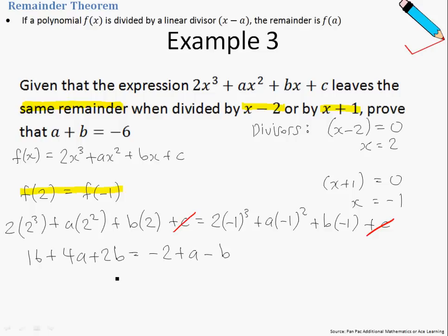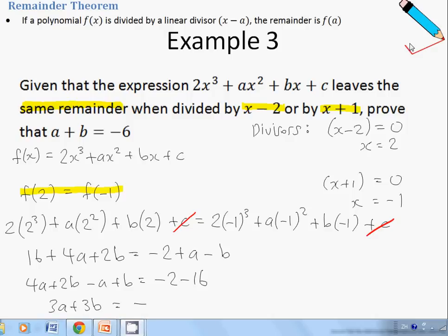The next thing I'm going to do is shift all the unknowns to the left-hand side of the equation. So I got 4a+2b-a+b=-2-16, shifting 16 over to the right-hand side. Simplifying this further, I'll get this, which equals -18.